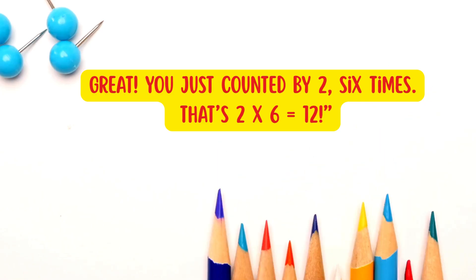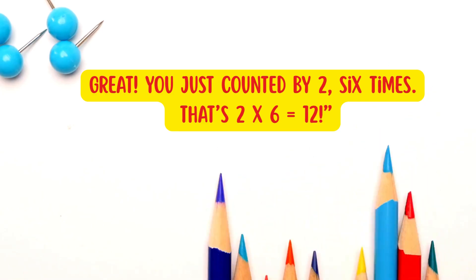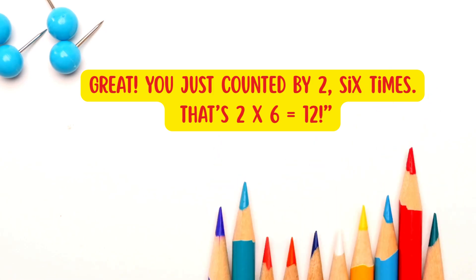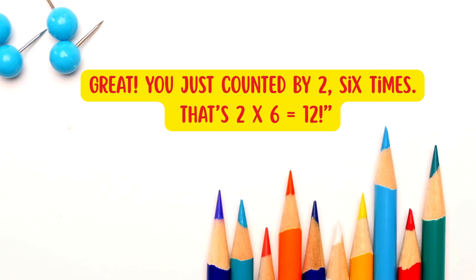Great! You just counted by two six times. That's two times six, which equals twelve. And you did it simply by skip counting. Cool, huh?